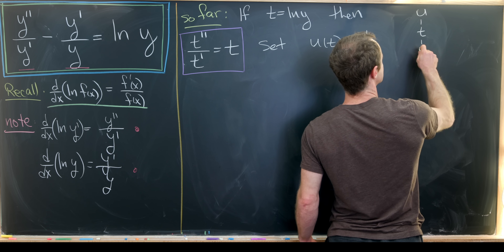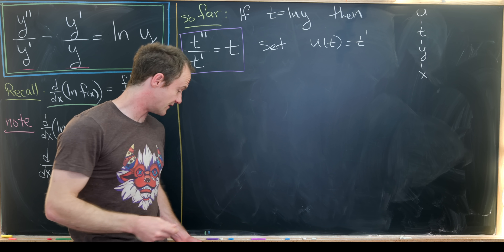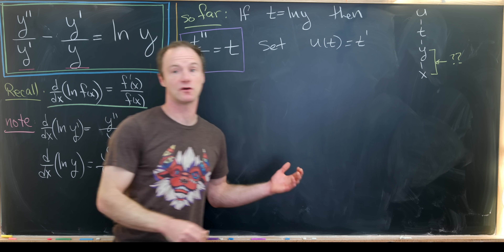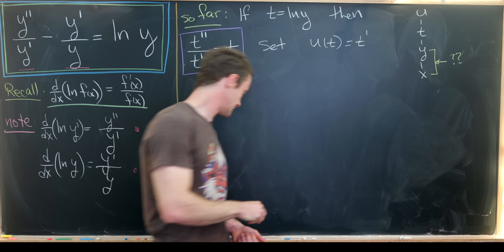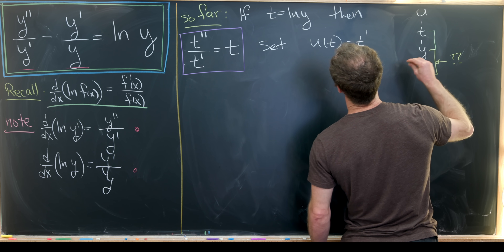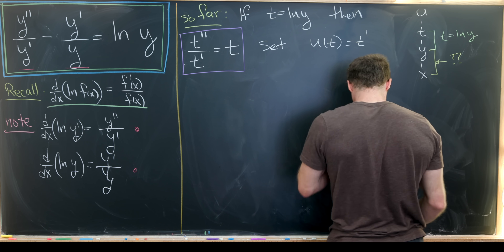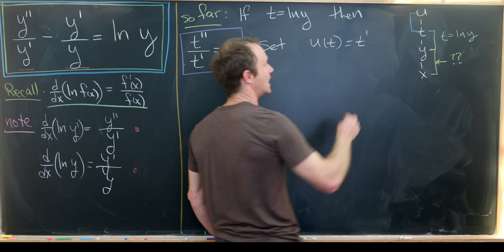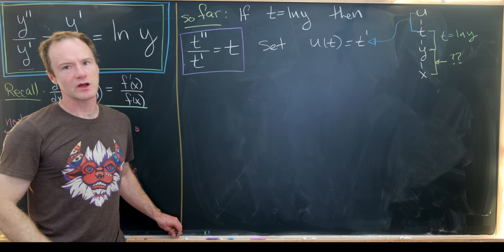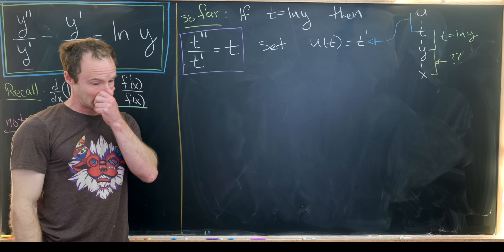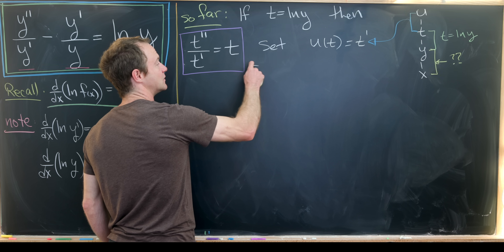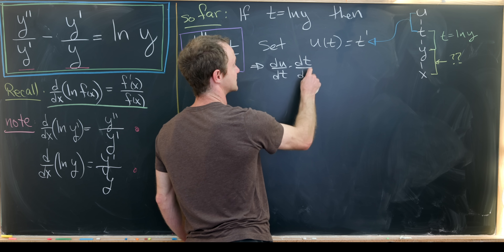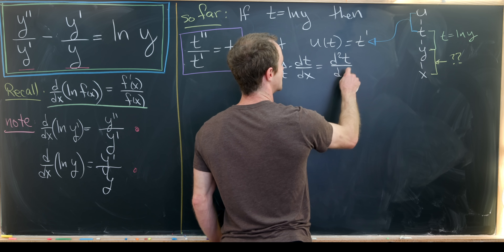We don't know exactly what the function u is — that's what we're trying to find. We're trying to solve y in terms of x. The dependence t = ln(y) is known. Now let's take the derivative of u = t' with respect to x: by the chain rule, du/dt · dt/dx = d²t/dx², which in our notation is u̇ · t' = t''.